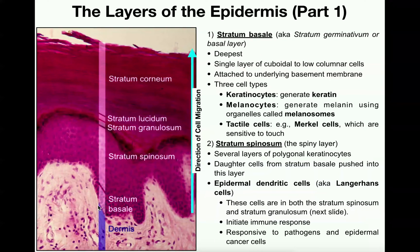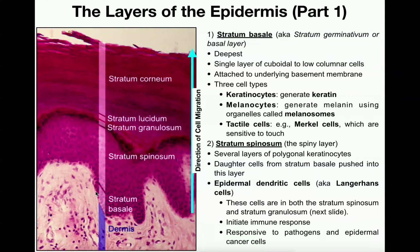Each of the cells in the stratum basale layer are attached to the underlying basement membrane. Recall that any time we have epithelial tissue — which is what the epidermis is — the cells that are deepest will be anchored to the underlying connective tissue via a basement membrane. The basement membrane is right between the stratum basale and the dermis, and the dermis is that connective tissue.